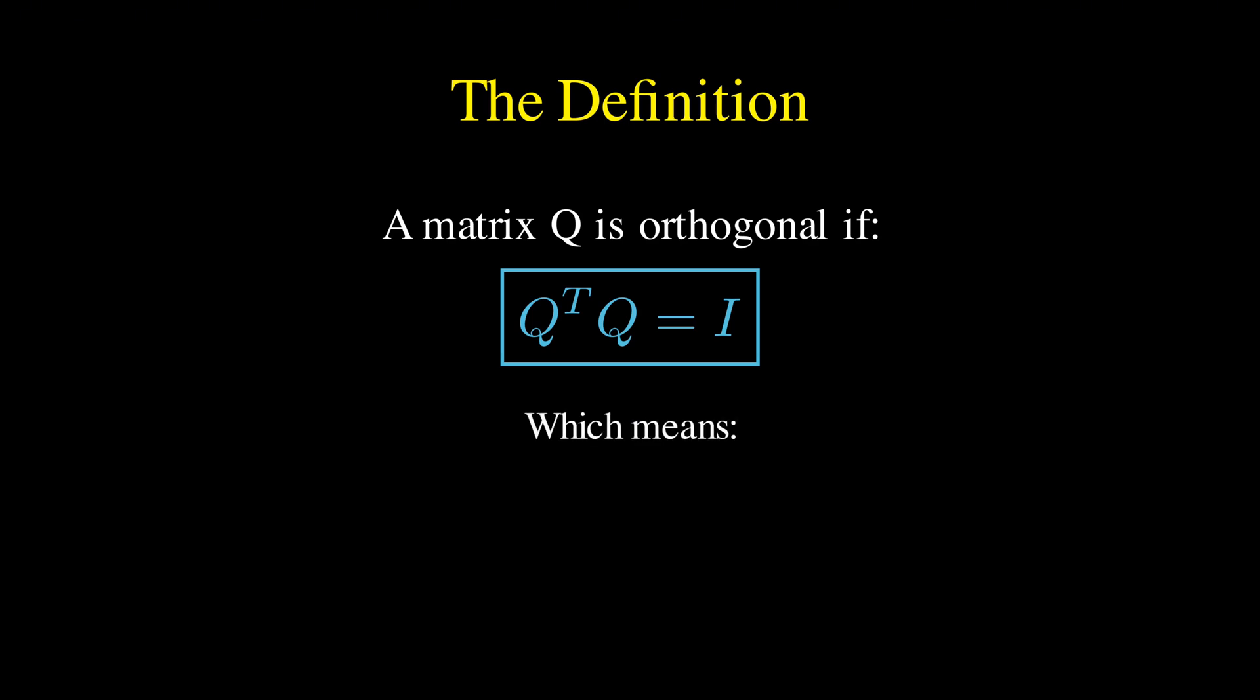If Q transpose Q equals I, then that tells us something beautiful: Q transpose is equal to Q inverse, so the transpose is the inverse.